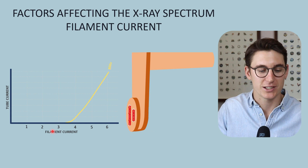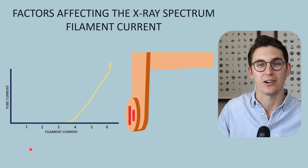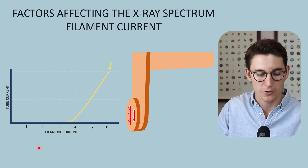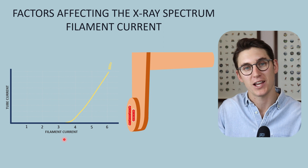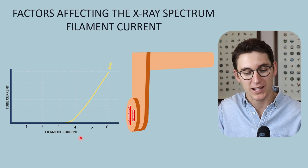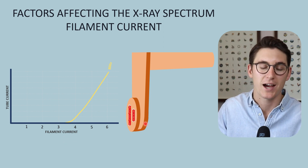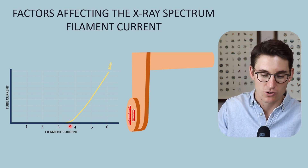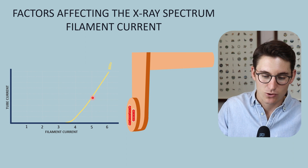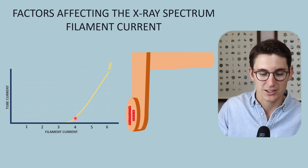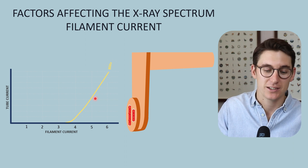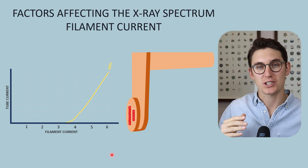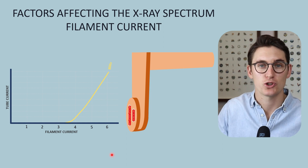If we look at this diagram, our y-axis represents our tube current — the number of electrons going from our cathode to our anode — and our x-axis is our filament current, the milliampere that we are running through our tungsten filament coil. Ignoring the first little bit of this graph, we can see that at a certain kilovolt percentage the graph is relatively linear, and importantly, our change in filament current results in a proportional change in tube current.